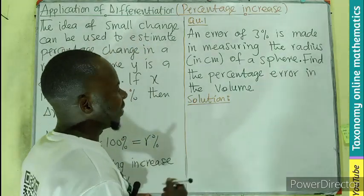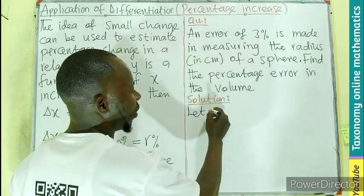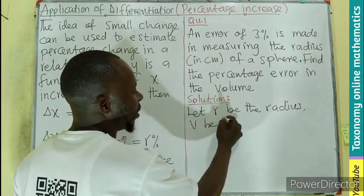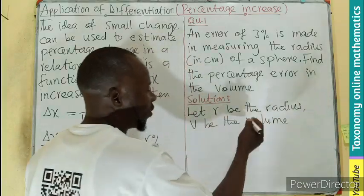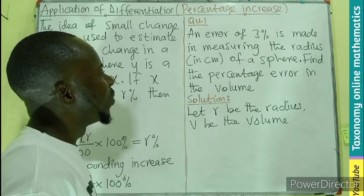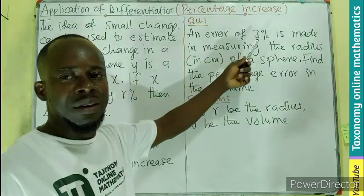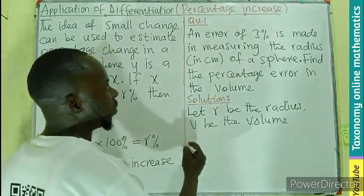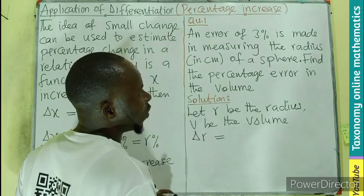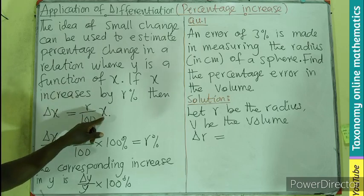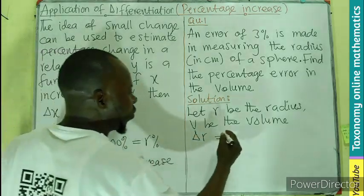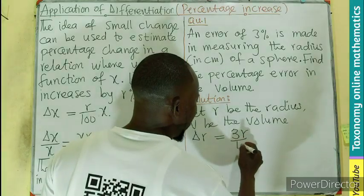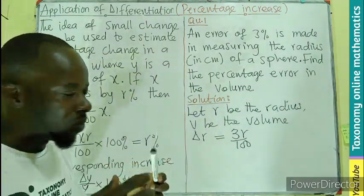Here we can start by letting the variables we want to use. So let r be the radius, then V be the volume. In the question, we are given the percentage increase in the radius. So here, delta r will be equal to the change, the percentage, which is 3, multiplying the quantity that we are having the change, which is r divided by 100. That is the change we have in terms of percentage.